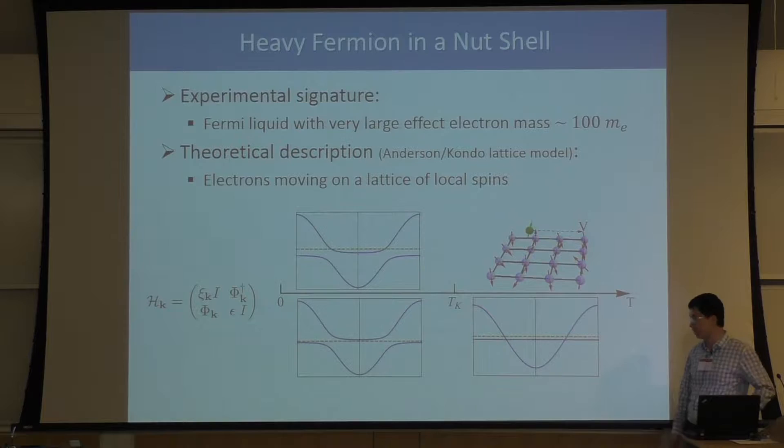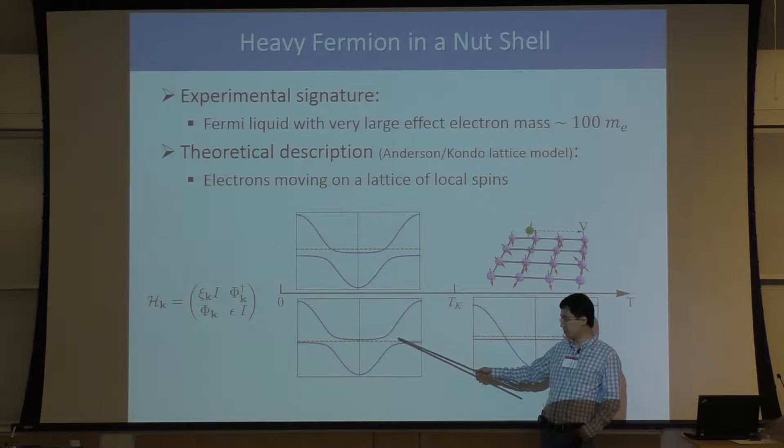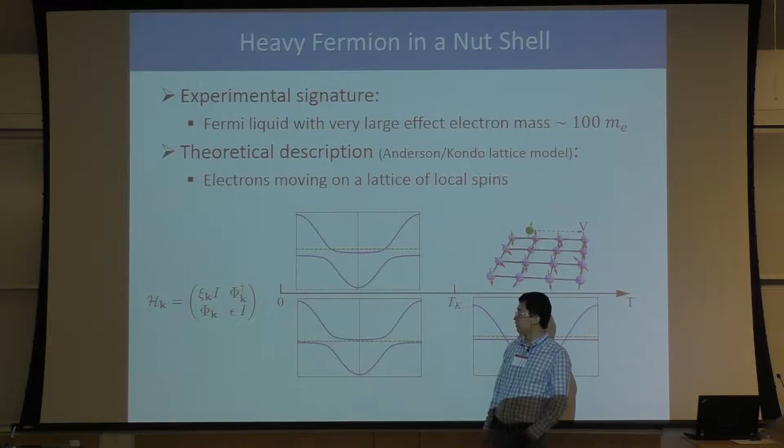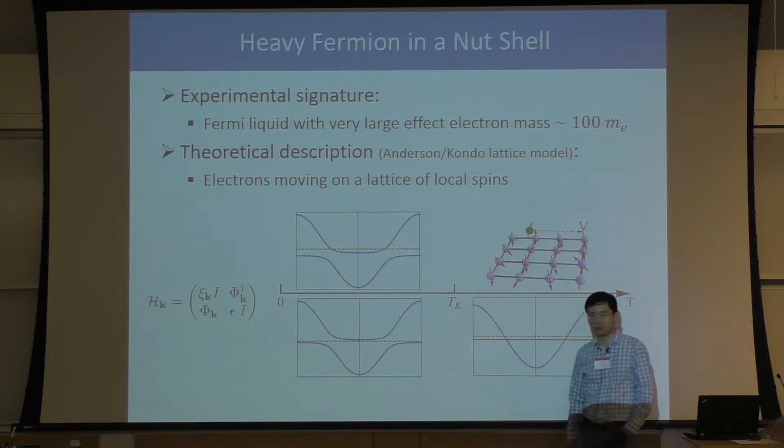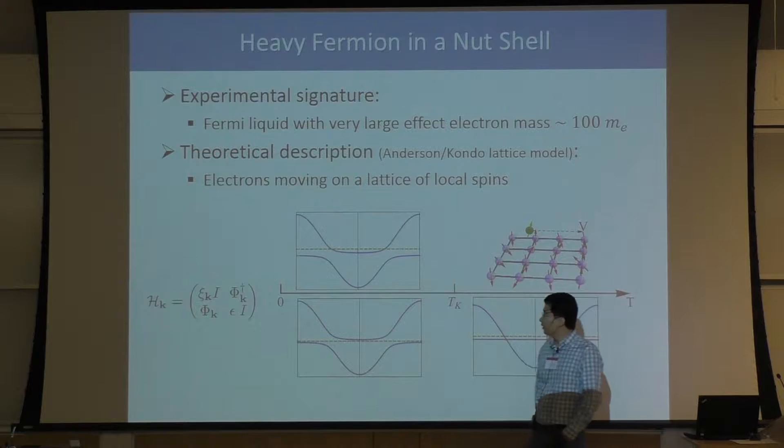If we think of the band crossing point as a two-fold degeneracy, degenerate perturbation theory tells us immediately that when we have hybridization between them, we will open up a gap. Once this gap is opened, there are two possibilities. One: the Fermi energy is crossing with one of the bands — now we have a heavy fermion metal. Second: the Fermi energy is inside the gap — now we have a heavy fermion insulator. Today we will mostly focus on the heavy fermion insulator.